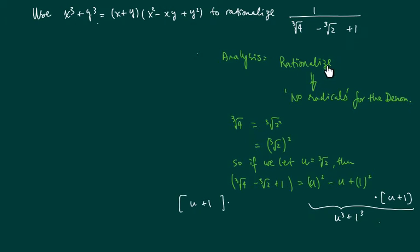Alright, the analysis looks something like this. When we're asked to be rationalizing something, basically it's a short way to say no radical signs on the denominator. Now given this cube, sum of the cube, we're going to have to tweak it a little bit.